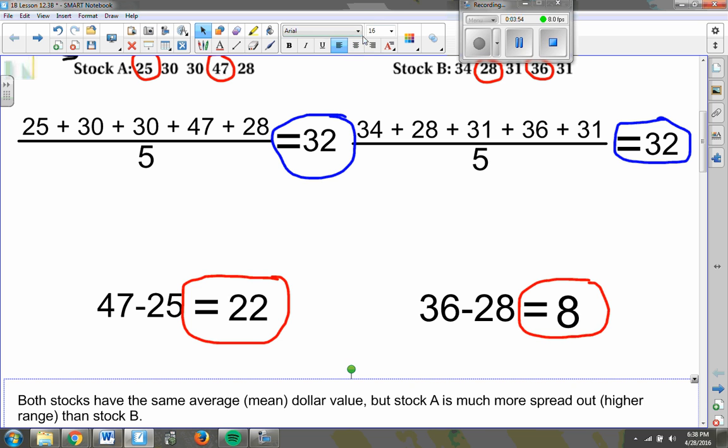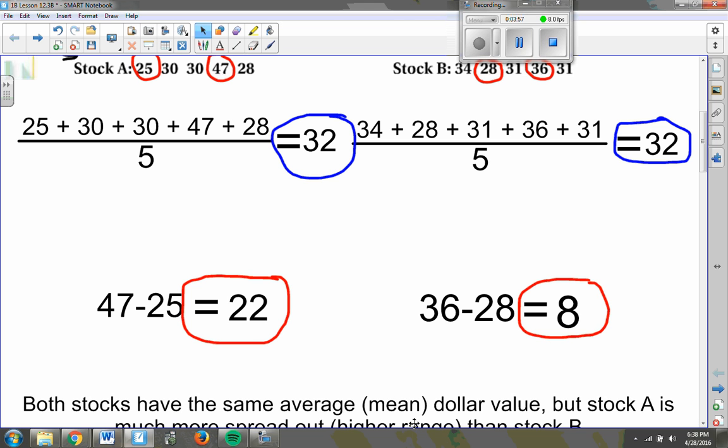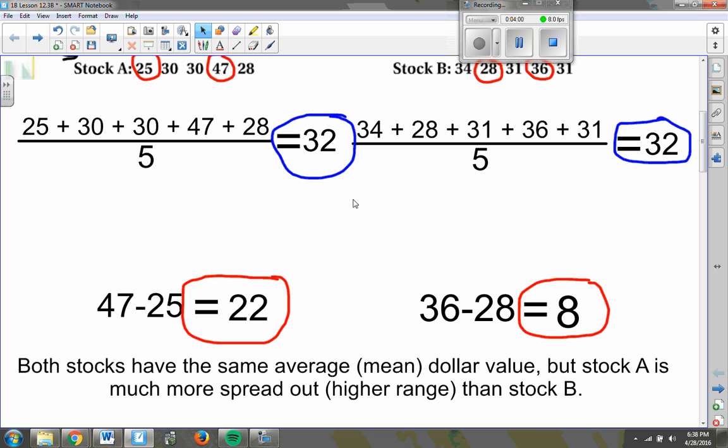So if I want to compare these two data sets, that is what I'm going to say. They have the same average dollar value. Both are 32, but stock A has a much higher range, much more spread out than stock B.